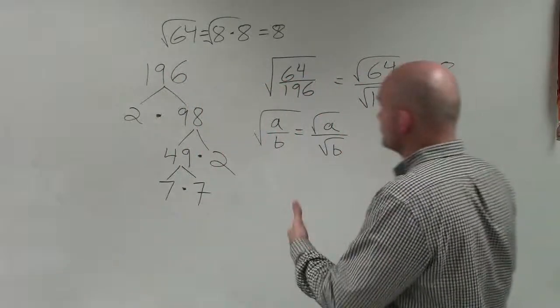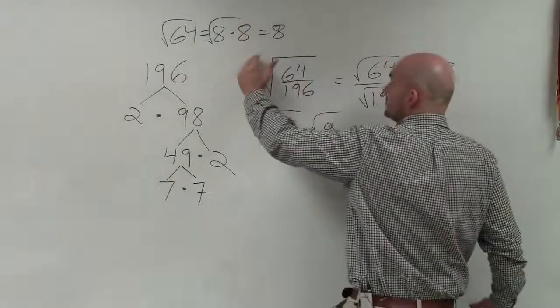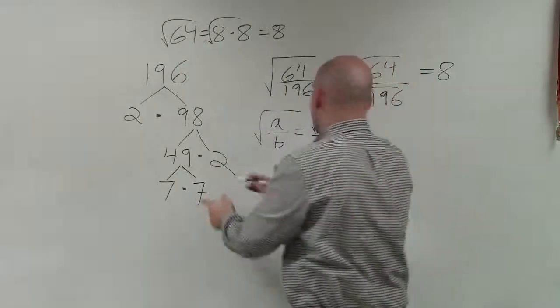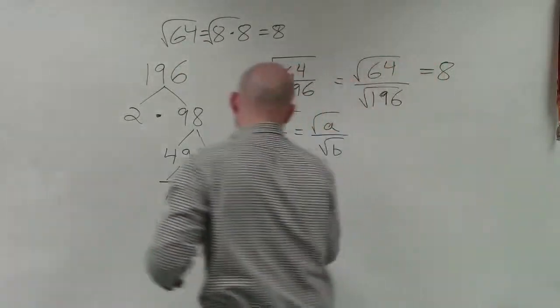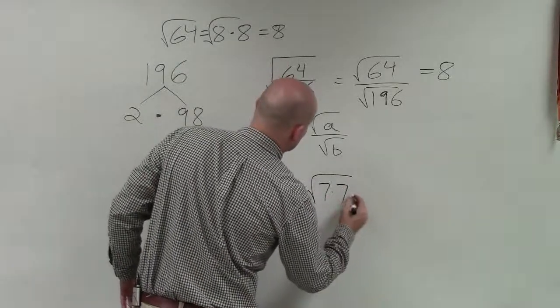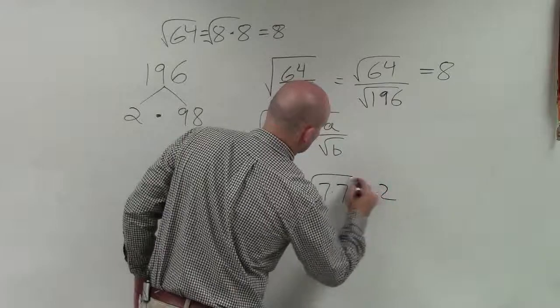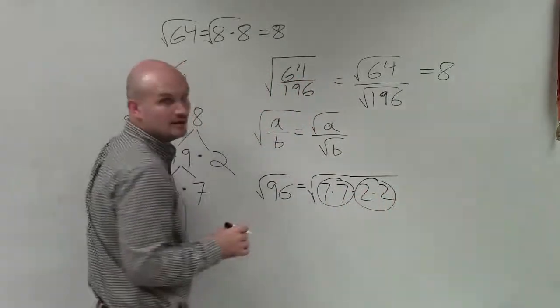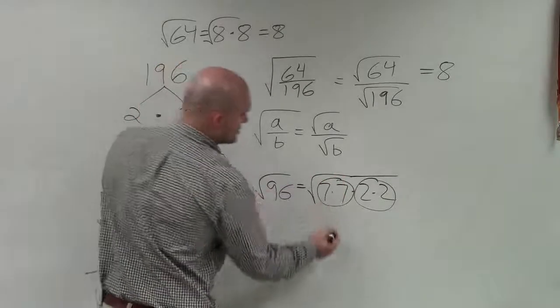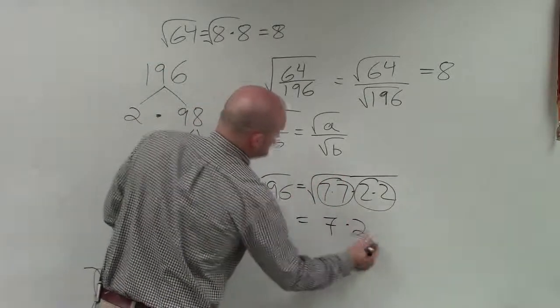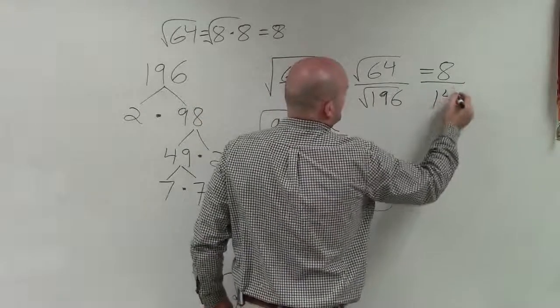And remember, when we're taking the square root, the square root means what number multiplied by itself gives us our radicand. So you can see here, I can rewrite the square root of 196 as equal to the square root of 7 times 7 times 2 times 2. I have two pairs of numbers. So basically, this is just going to be 7 times 2, which is equal to 14.